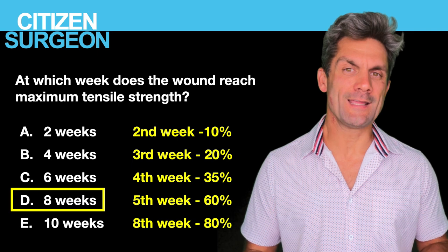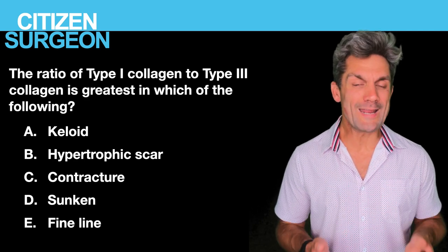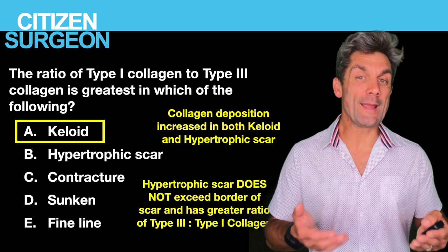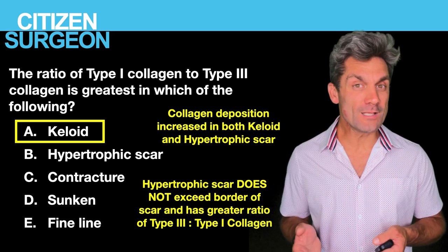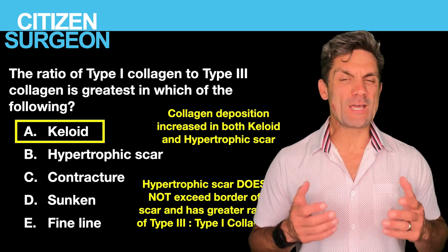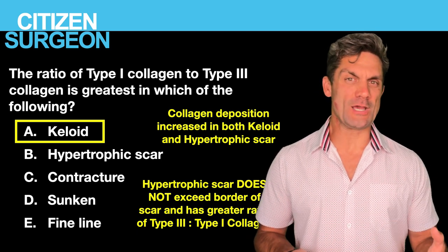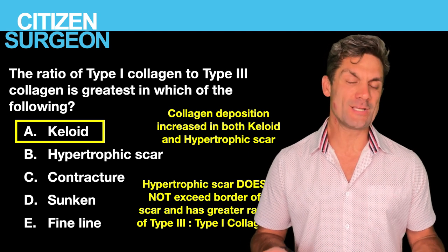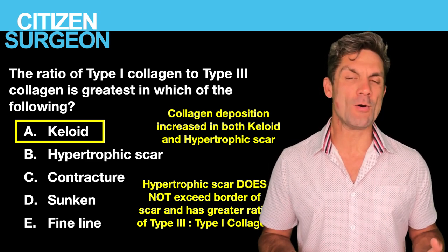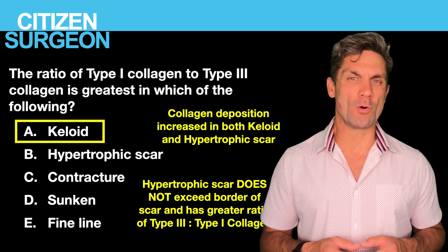Eight weeks is when the wound reaches maximum tensile strength. Question twelve: the ratio of type one to type three collagen is greatest in a keloid scar. The inverse is true for a hypertrophic scar — hypertrophic scars have more type three than type one collagen, while keloid scars have more type one than type three. Collagen deposition is increased in both, but the ratios differ. Importantly, keloid scars extend past the border of the wound, whereas hypertrophic scars stay within the wound border.